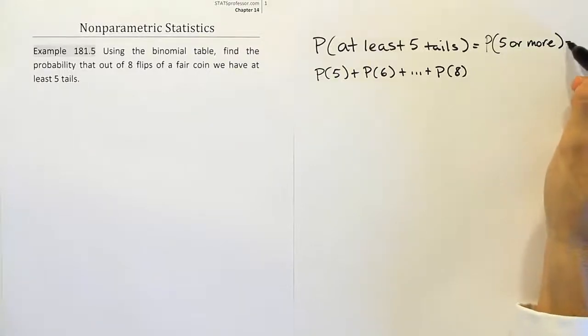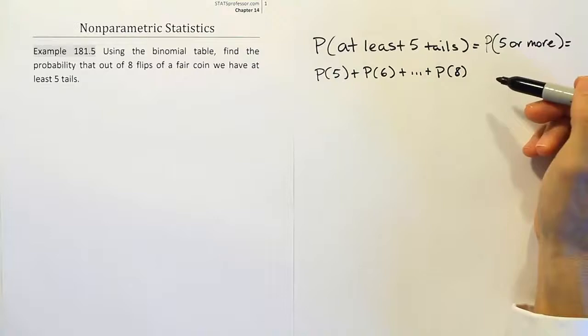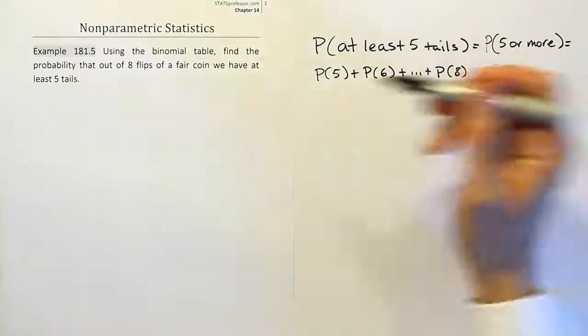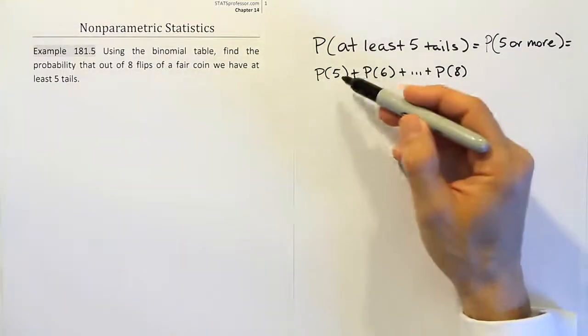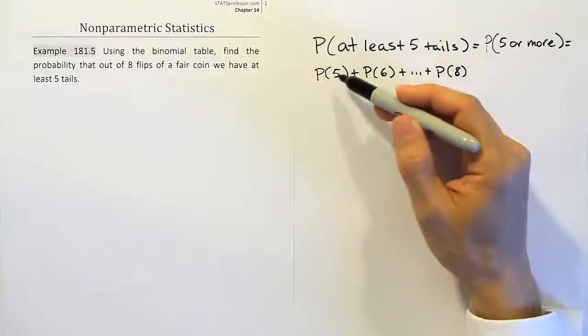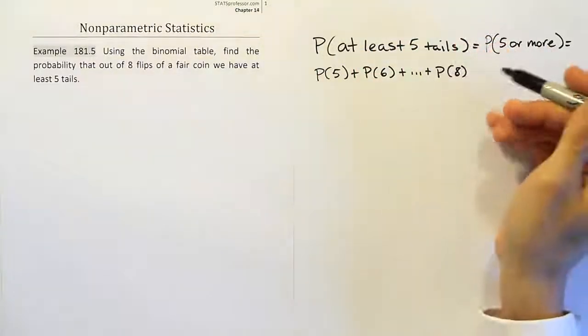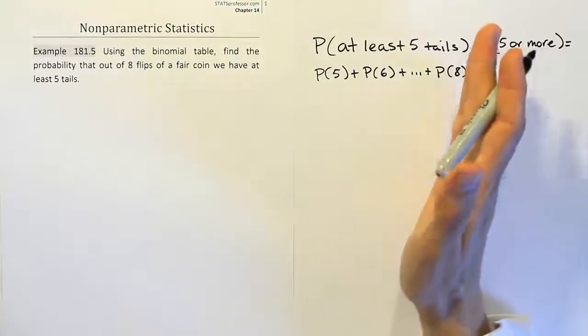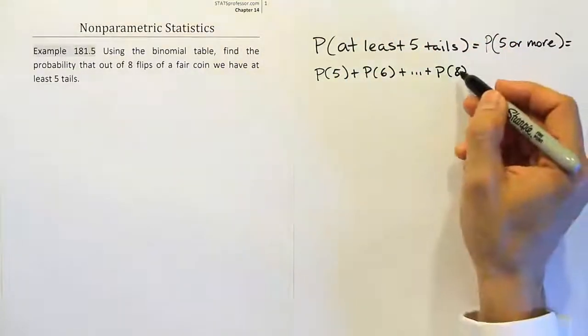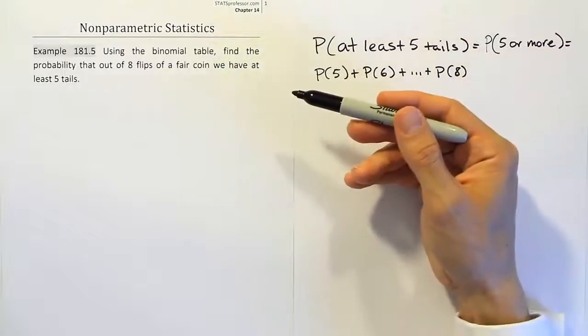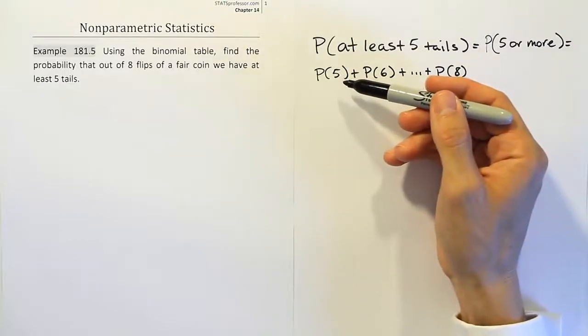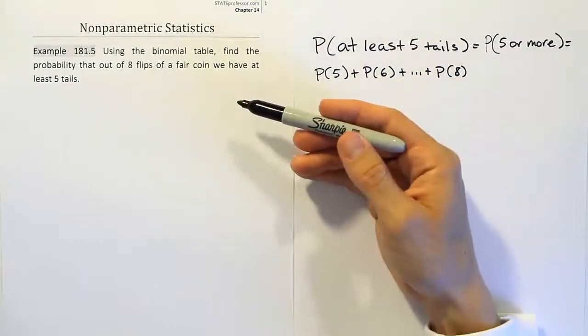Okay, so this is essentially the correct probability statement. However, when we use the binomial table like they're asking us to do, we can't do this. We can't add probabilities successively all the way up to a certain number. We can only take from a starting point and go down. So if I looked up eight, for example, I could get eight all the way down to zero added together. If I looked up five, I could get five all the way down to zero added together.